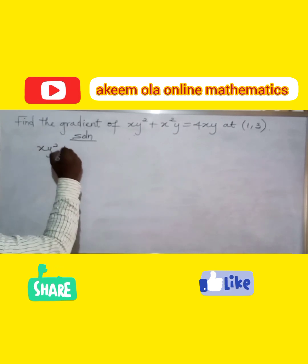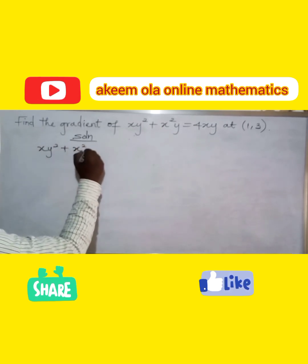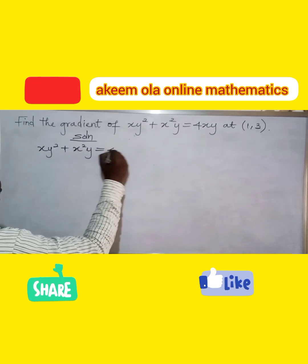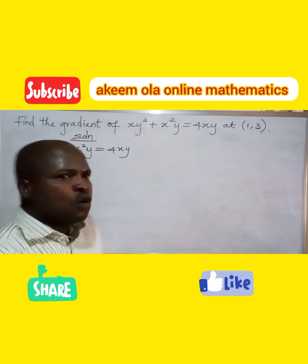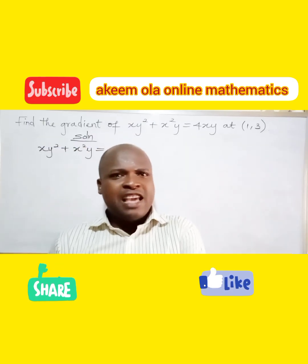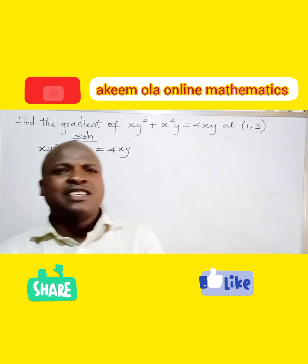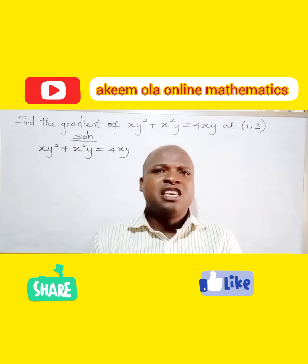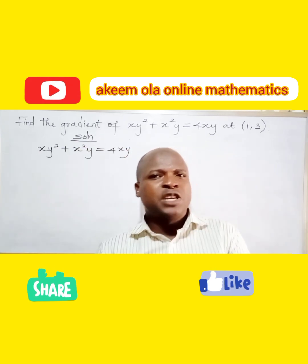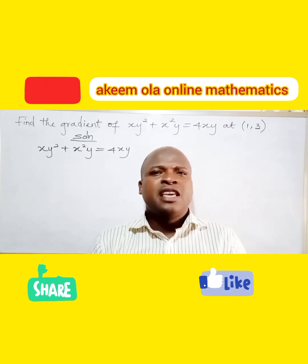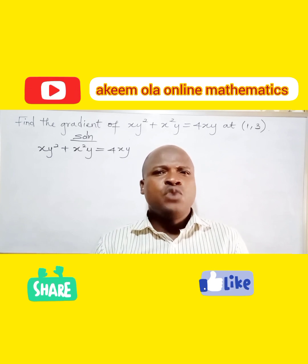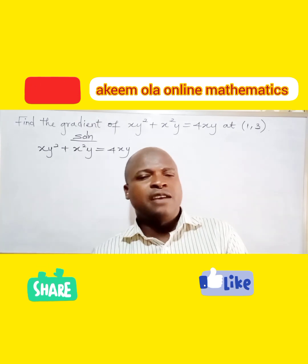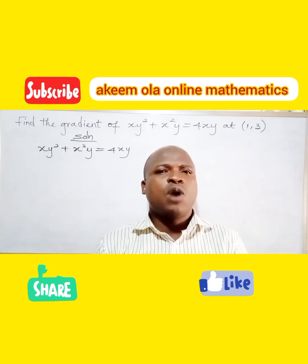We have xy squared plus x squared y is equal to 4xy. We are going to differentiate everything here. We are going to use the implicit method to differentiate.